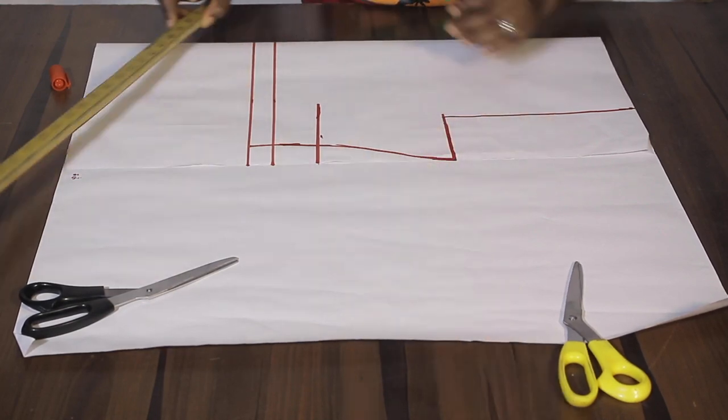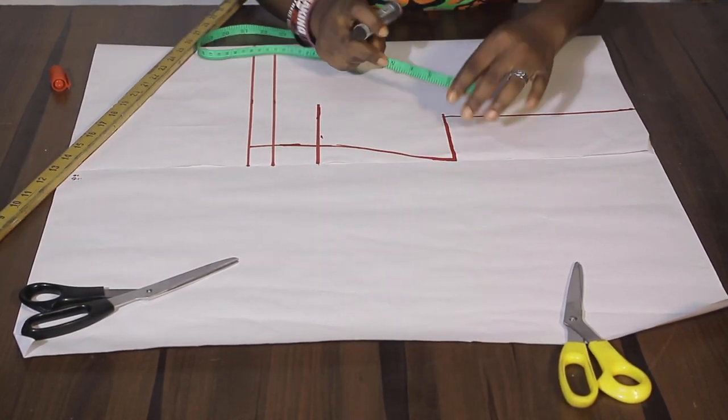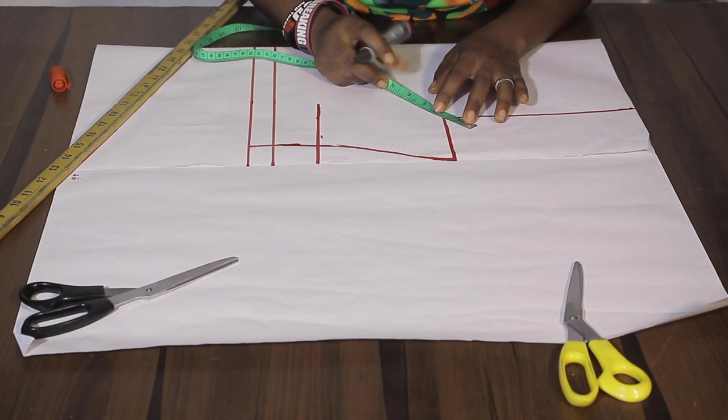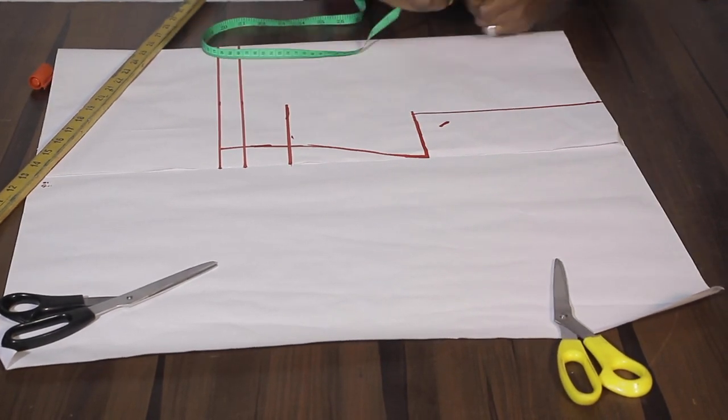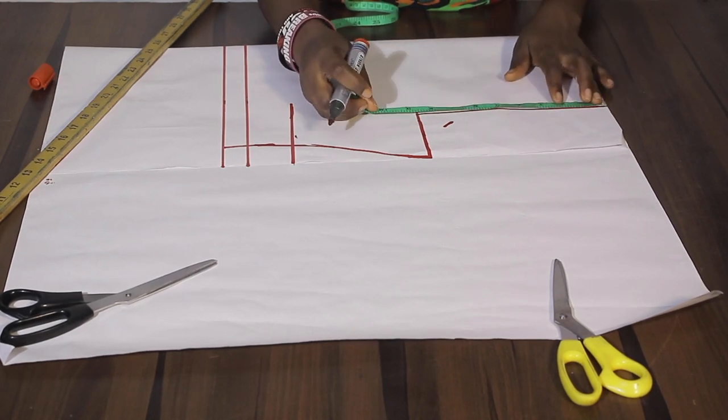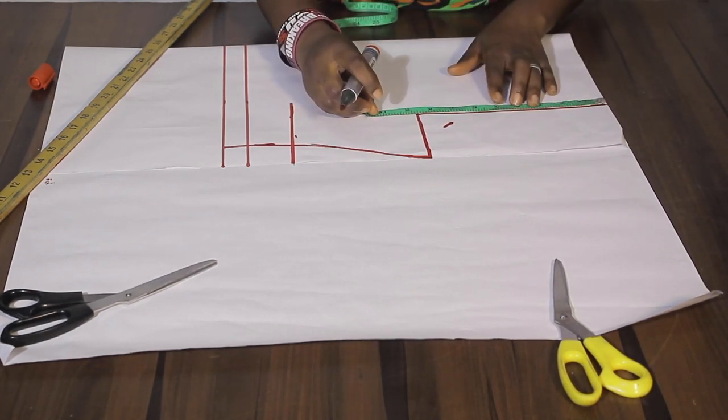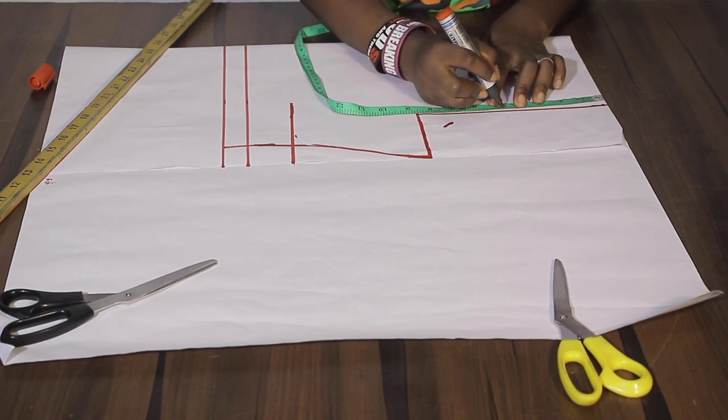And from this point I am going to take 1.5 inches across. And I need to get the midpoint. That would be 4.25. That's the midpoint of 8.5 which is the armhole length.